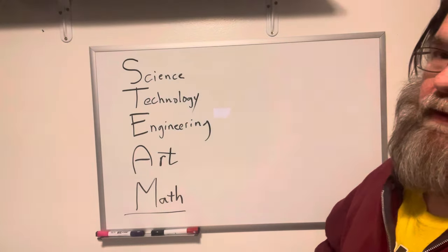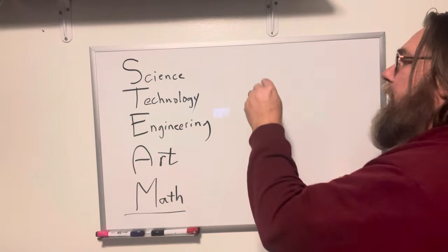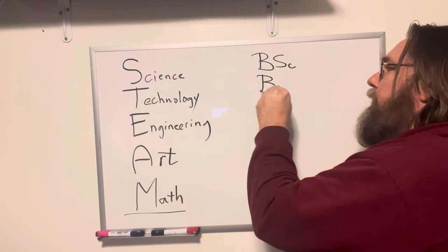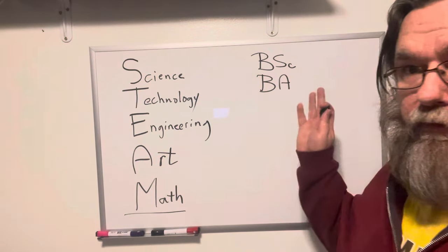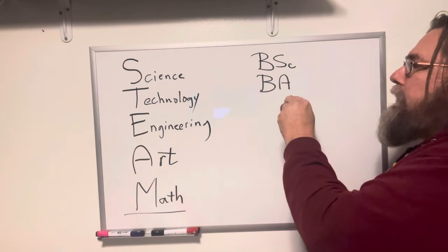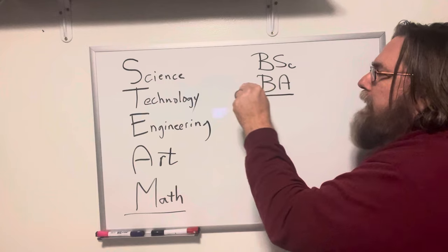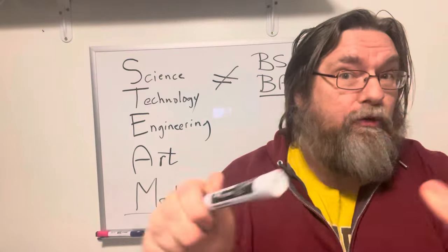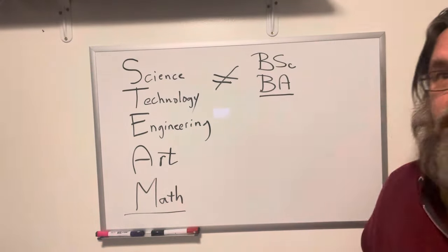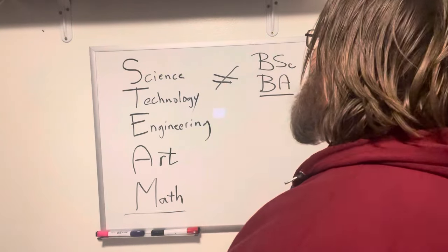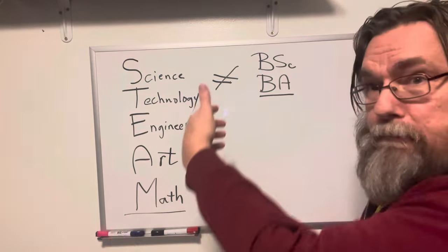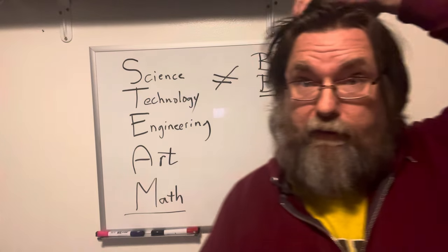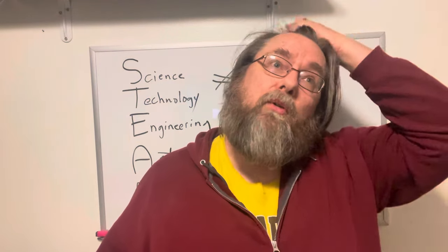You go to college and get a bachelor's degree. You're going to either walk out with a bachelor's of science or a bachelor's of arts. If you get a bachelor's of arts, you are not a scientist by education. You may do science, and that will make you a scientist, but by education you are not. There are some professions that can be both science and non-science — like archaeology is one of those. Psychology is another one.